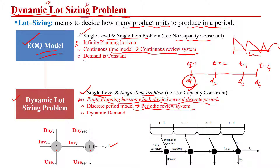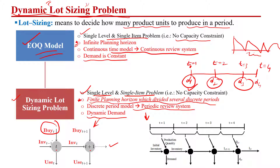In the EOQ model, demand was constant. But here, the demand changes over time across every time period — D2 could be different, D3 could be different, and so on. Here I am showing you the graphical representation of the dynamic lot sizing problem. Our decision variable is how much we should order or buy, what the inventory level is at the start of this time period, and how to meet the demand of this time period.